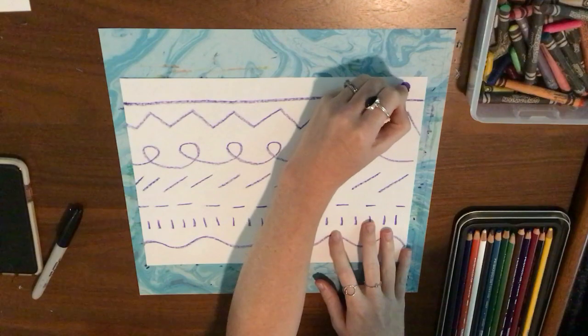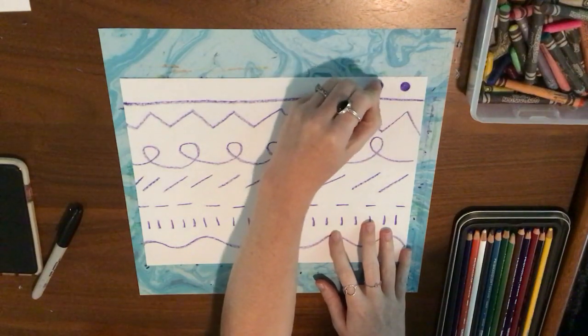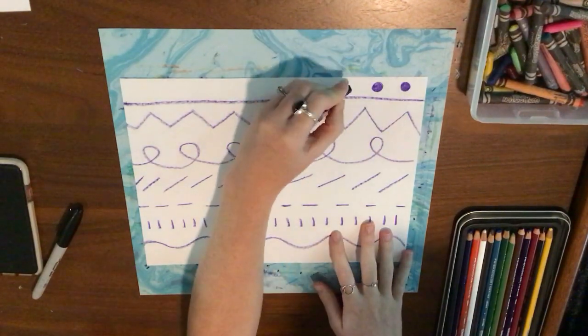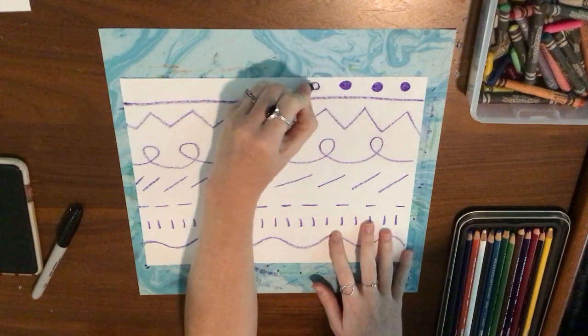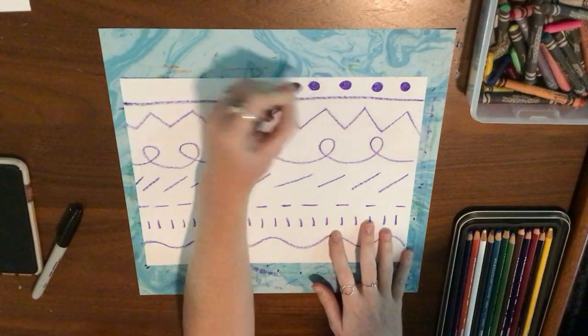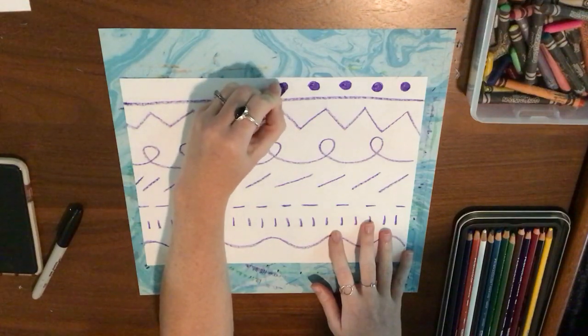Next I'm going to draw a dotted line and a dotted line is a circle that you draw and then you color in the circle. So when you do a bunch of circles in a line, it's called a dotted line.